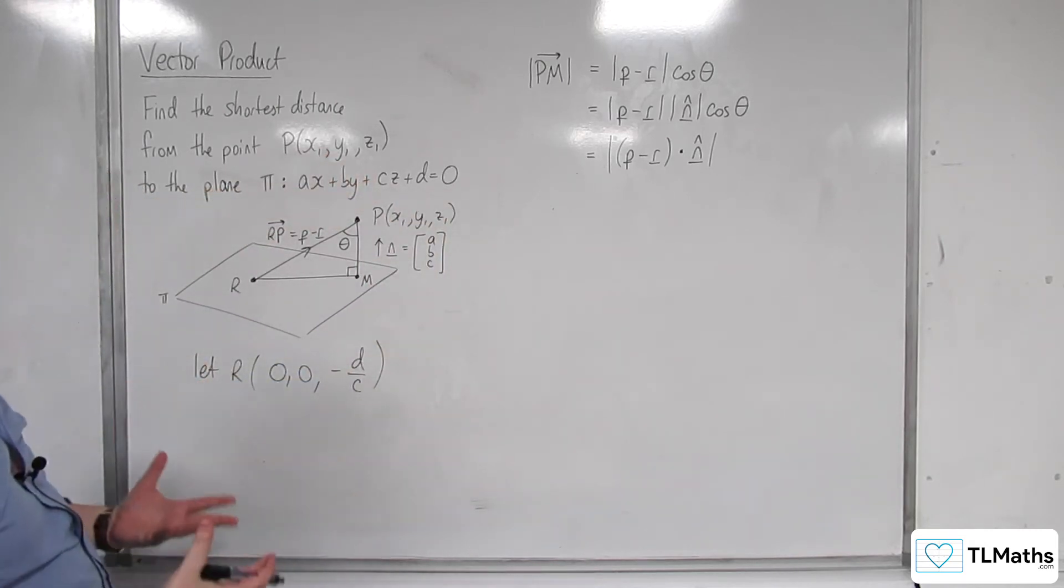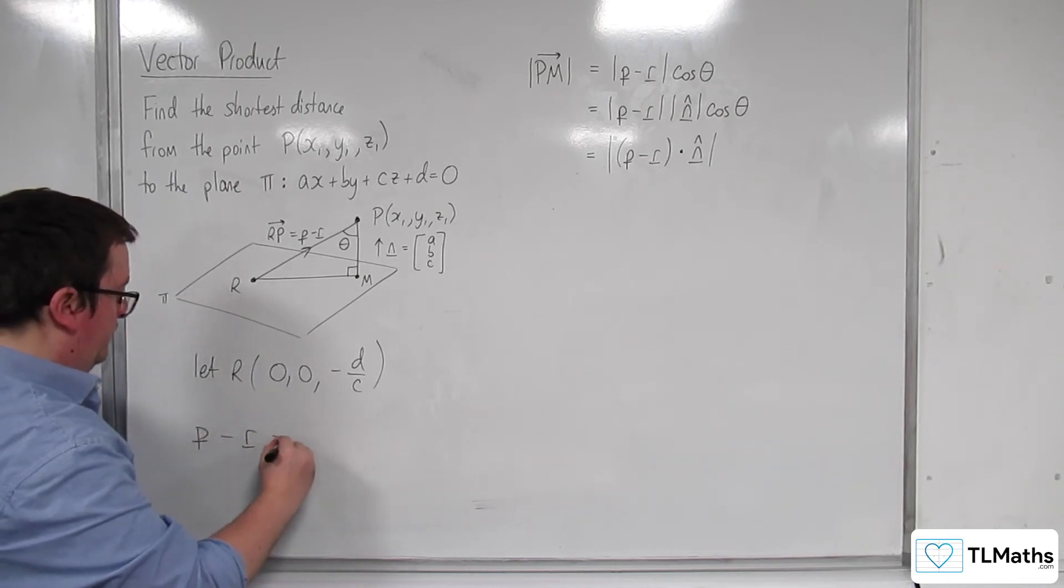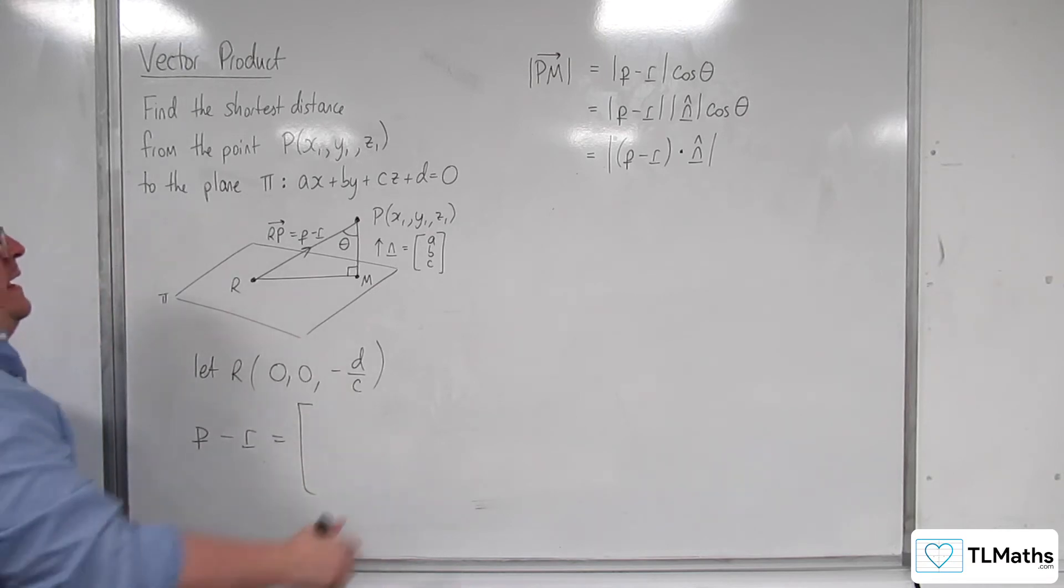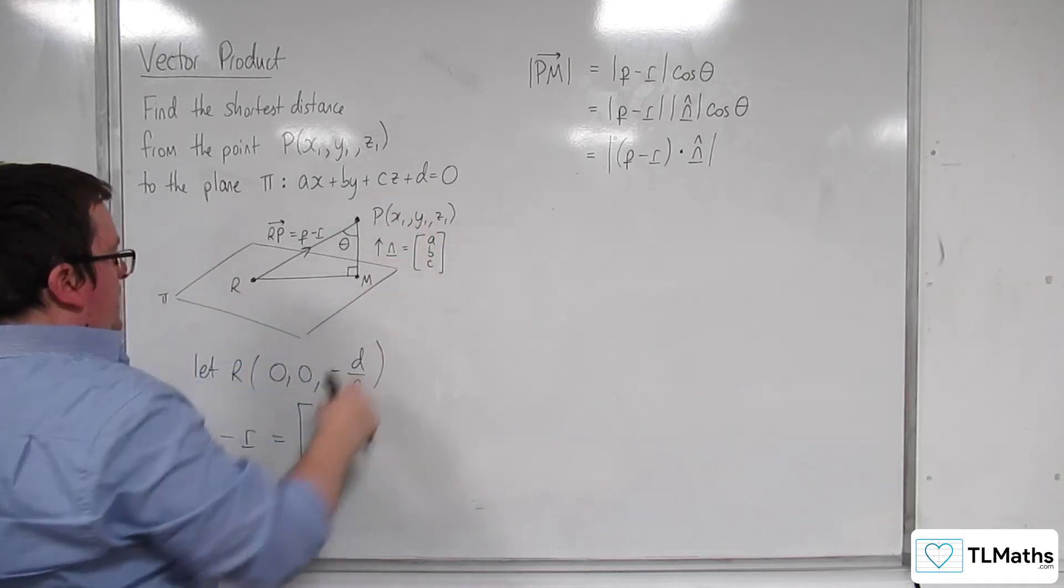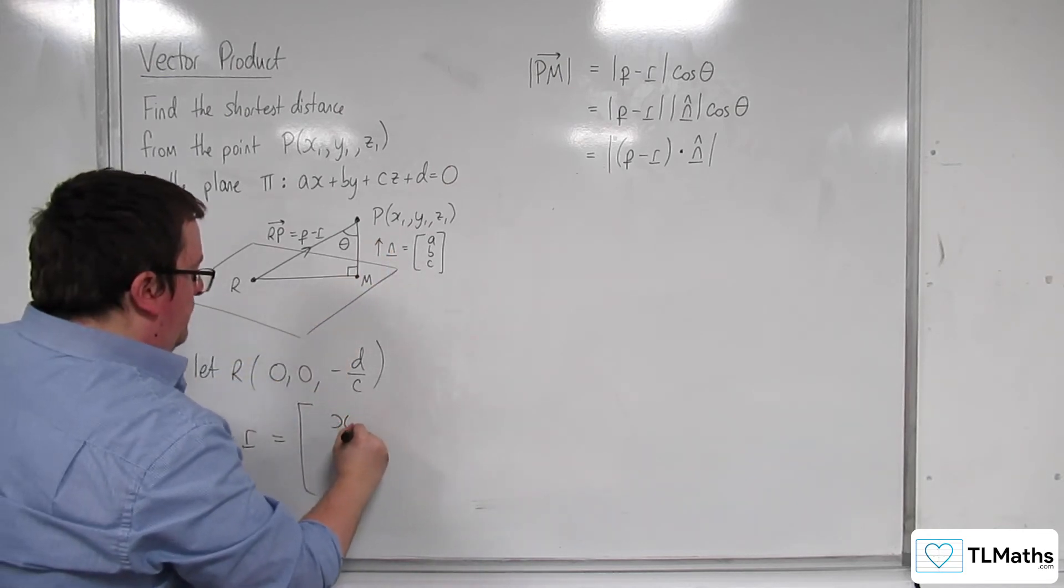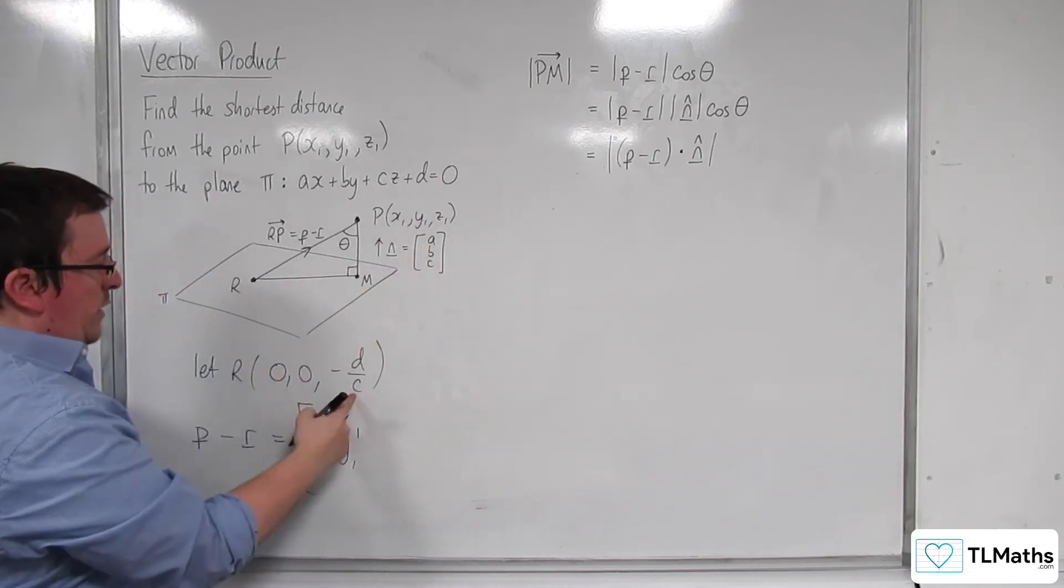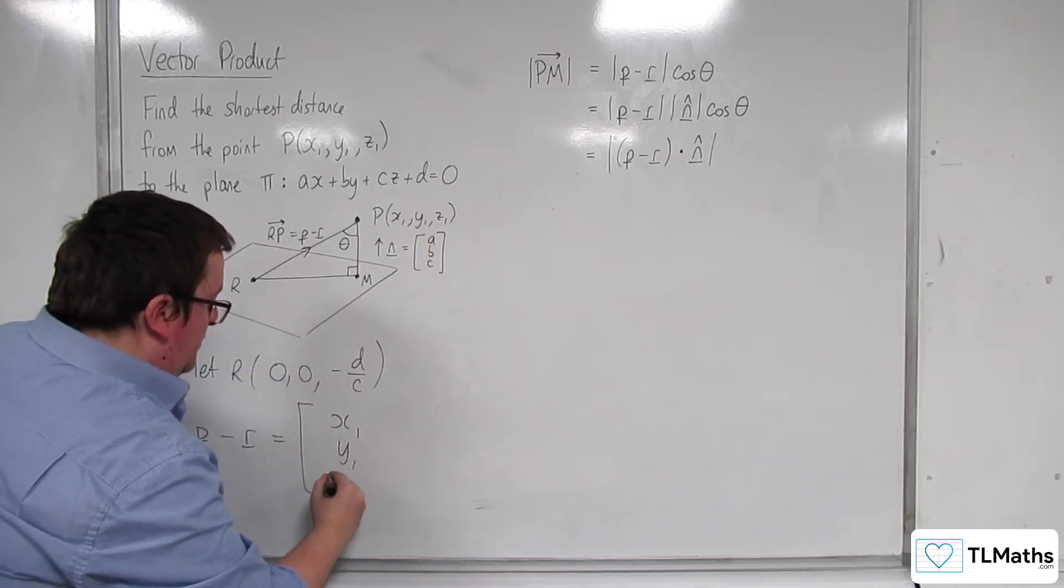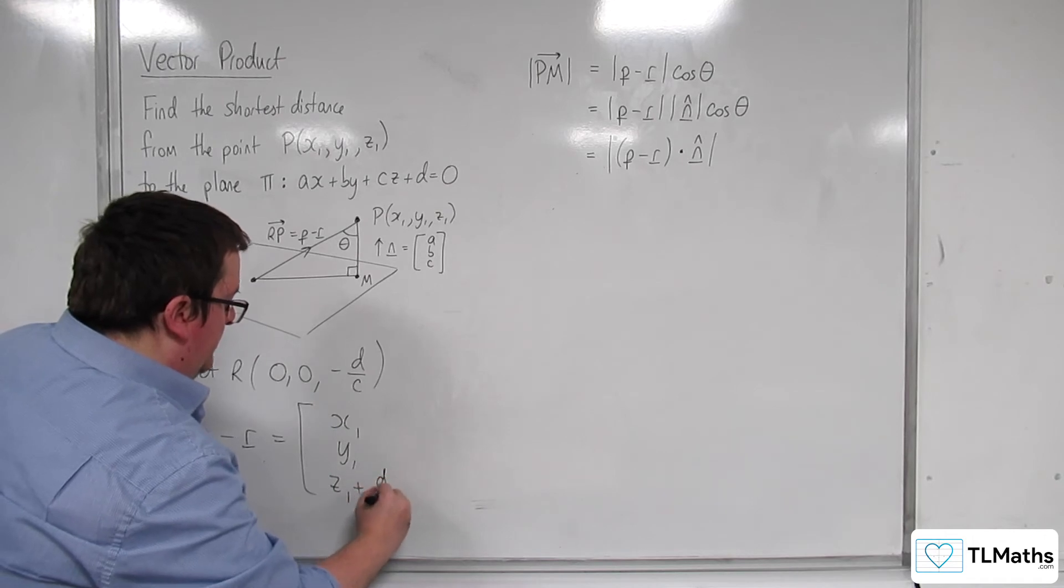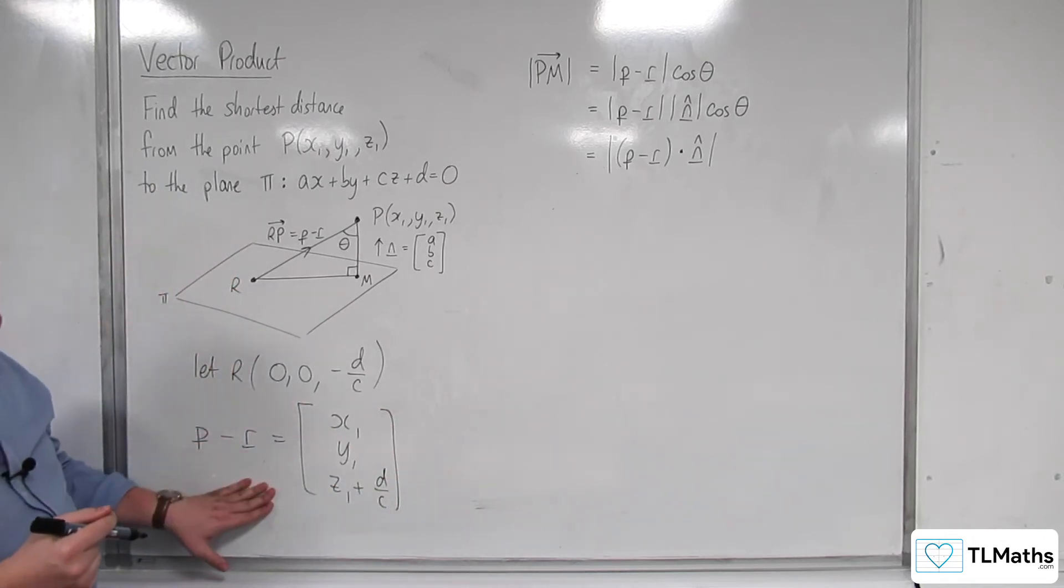So we now have R, so we can write down that P minus R is X1, Y1, Z1, take away 0, 0, minus D over C. So X1 take away 0 is X1, Y1 take away 0 is Y1, Z1 take away minus D over C. So Z1 plus D over C. So that's P minus R.